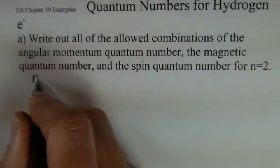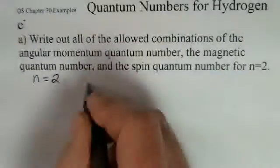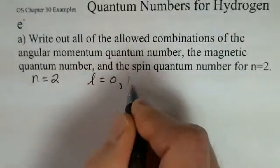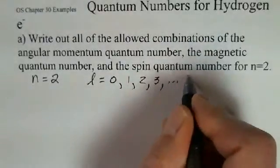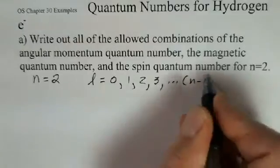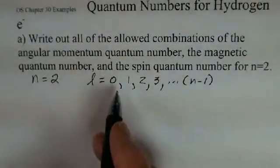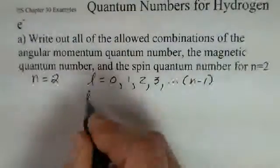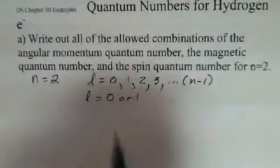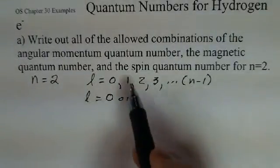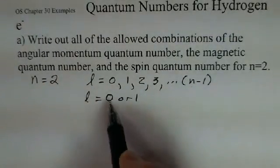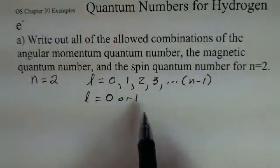So if n is equal to 2, we know that the list of angular momentum quantum numbers, the L, starts at 0 and then continues until we reach the number that's n minus 1. For this case, our L is going to equal 0 or 1. We have to stop at 2 minus 1 in this list. L is an integer and starts at 0, goes up until we reach n minus 1.